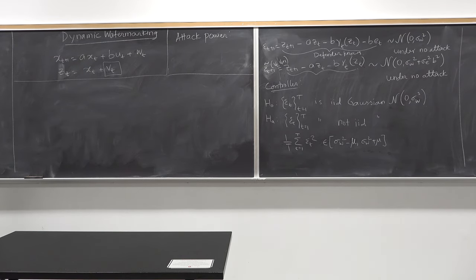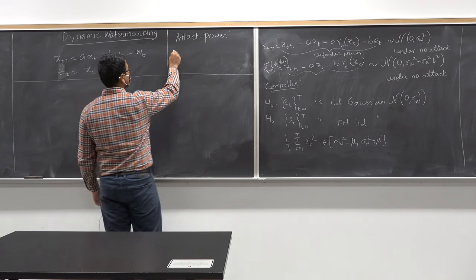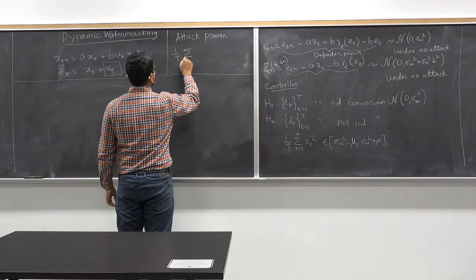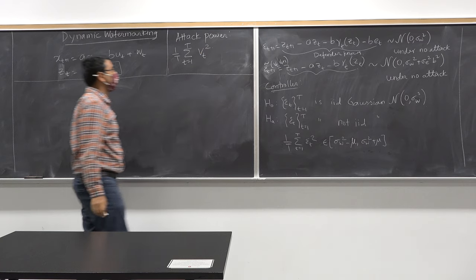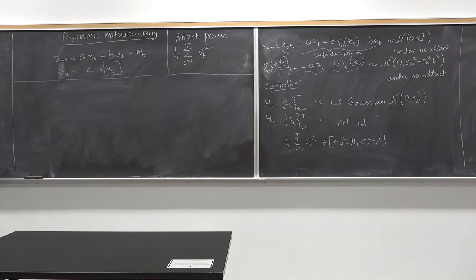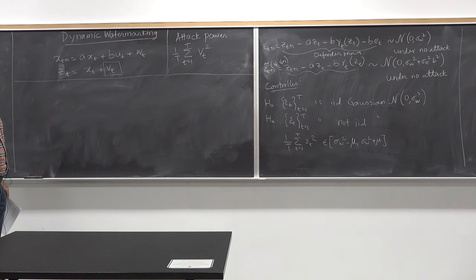One notion that is widely used in the literature is the following: the average attack power is defined as the limit of (1/T) * sum_{t=1}^{T} v_t². Here v_t² is the power at one time step, and you take the average over all time steps. One major result in this area is based on the following elementary — though requiring significant work to prove — fact.